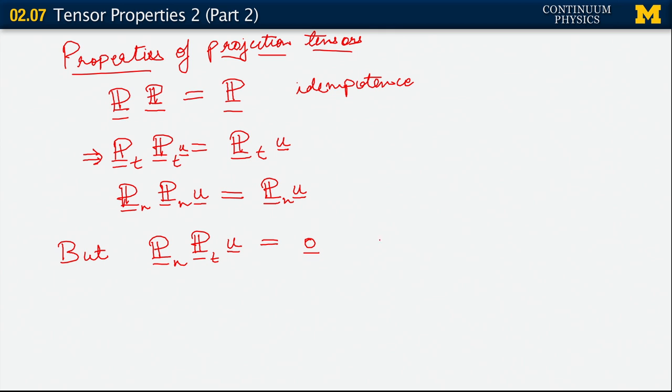What this implies is that P sub n is an orthogonal projection relative to P sub t. That's easy enough to check. Let's check this quickly.